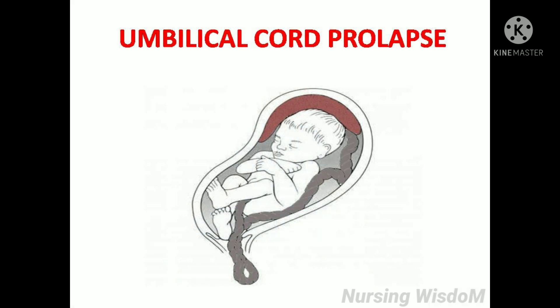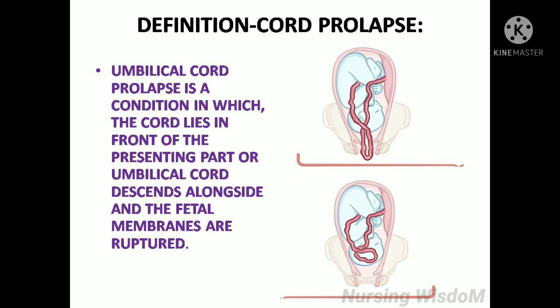The word prolapse means coming down or slipping forward. From this we can understand umbilical cord prolapse means the umbilical cord is coming down or slipping forward. The definition: umbilical cord prolapse is a condition in which the cord lies in front of the presenting part, or the umbilical cord descends alongside, and the fetal membranes are ruptured.